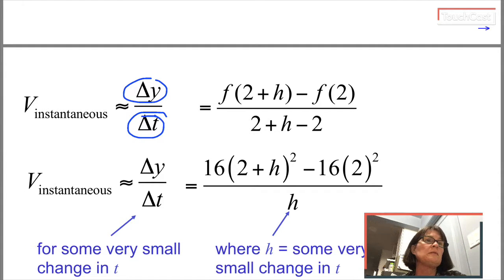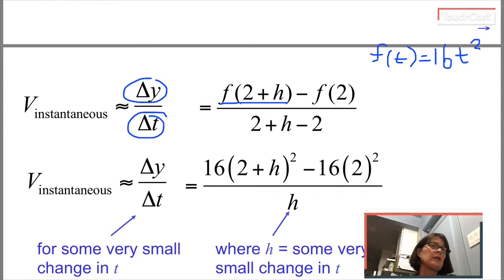So change in position divided by change in time. And so that means we had f of t was 16t squared. I'm just copying that from the other slide so we remember. So I'm going to take the position at the later time and subtract the position at the earlier time. That's the change in position, which is distance.